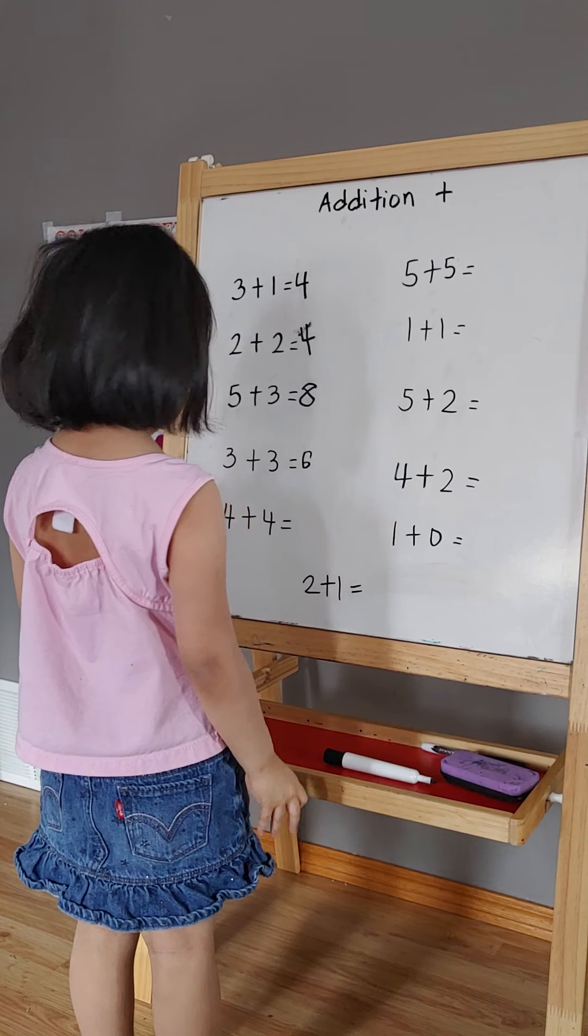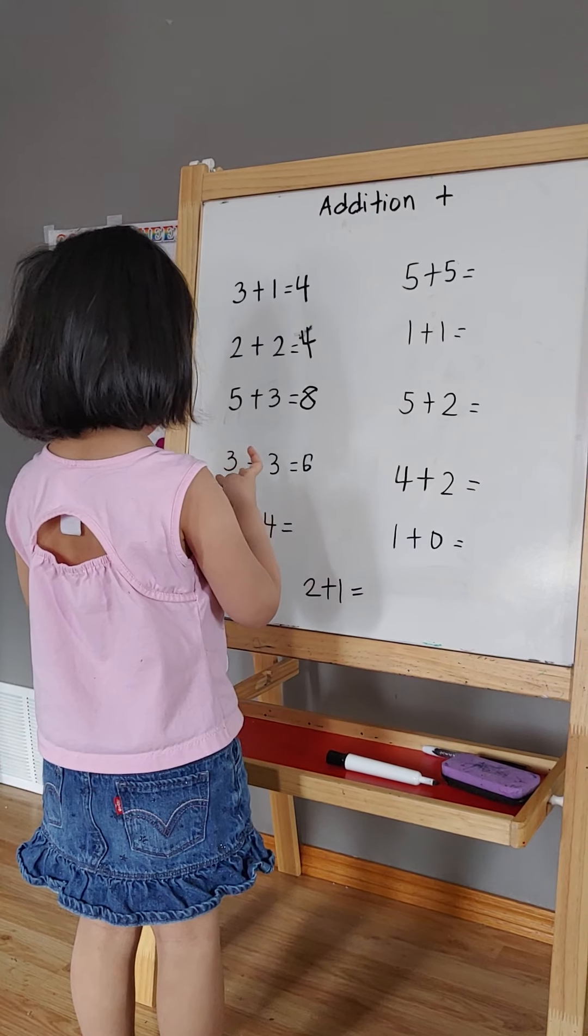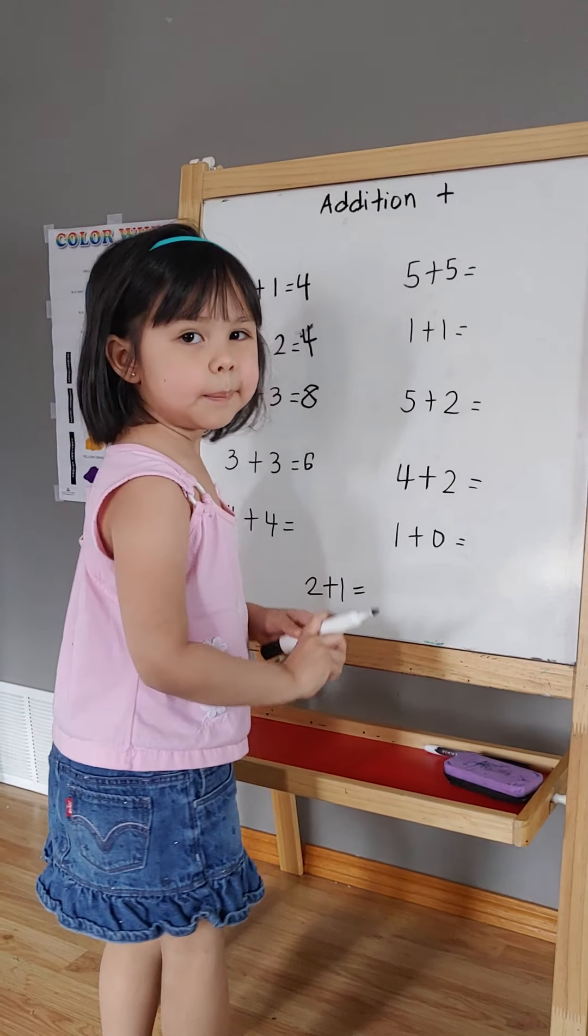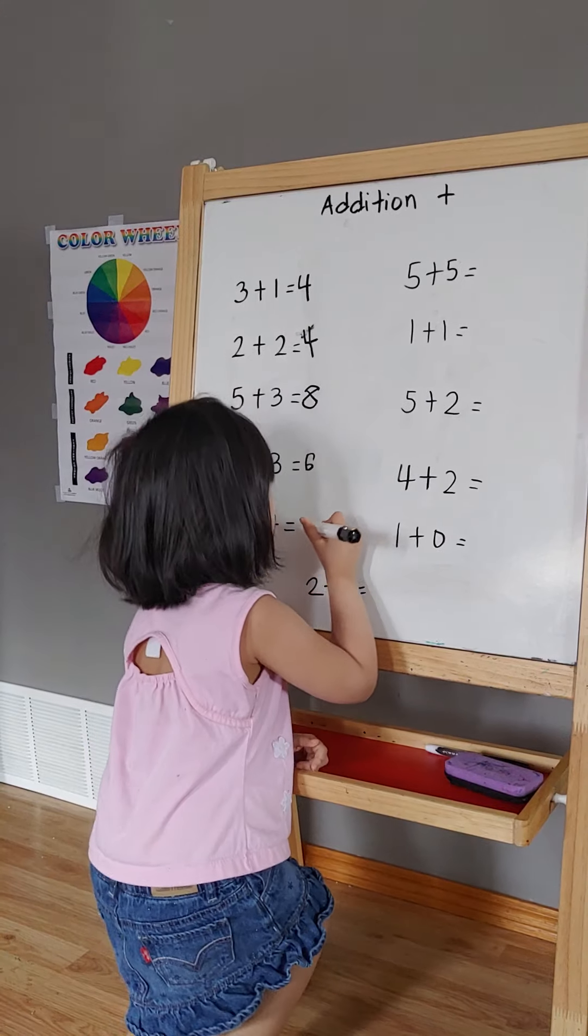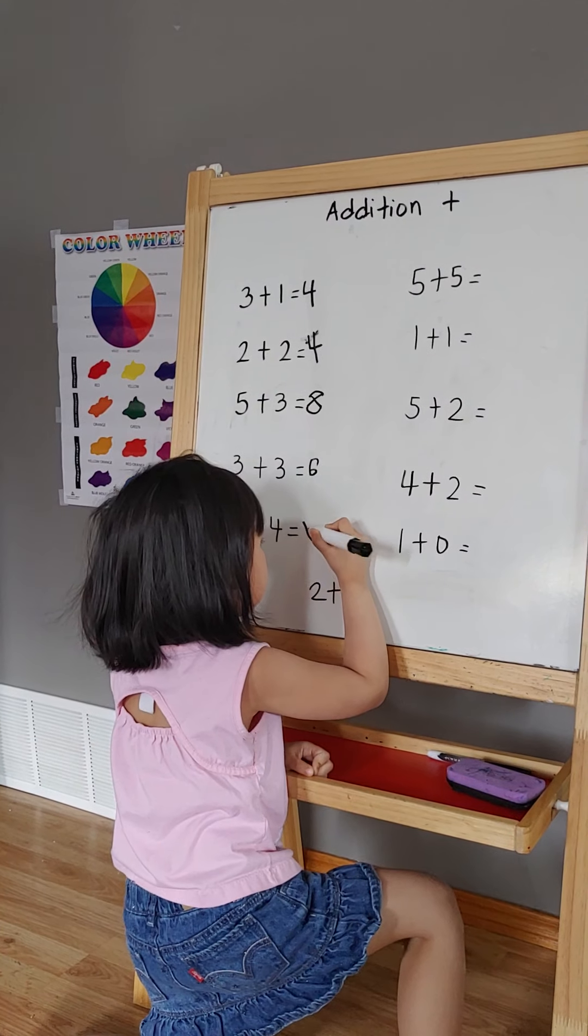4 plus 4. So put 1 on my finger and put 4 on my other finger. That's 1, 2, 3, 4, 5, 6, 7, 8. 8.